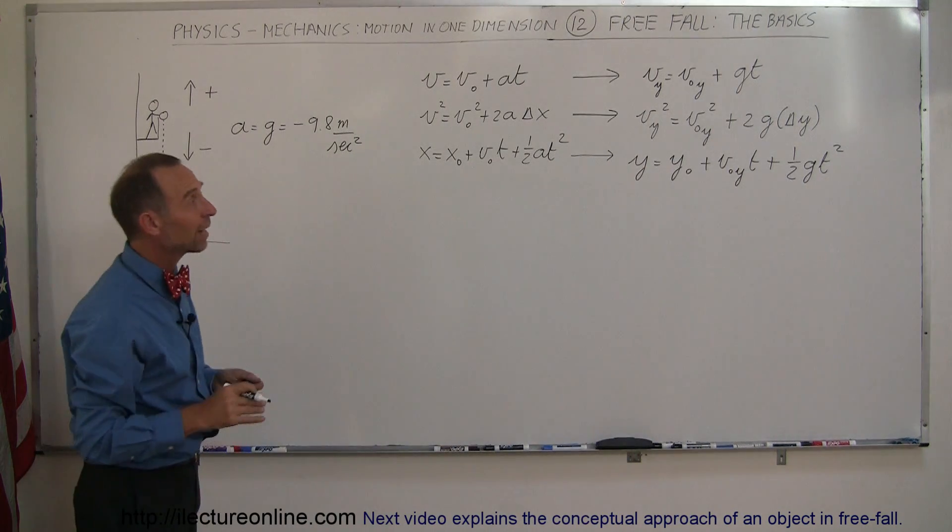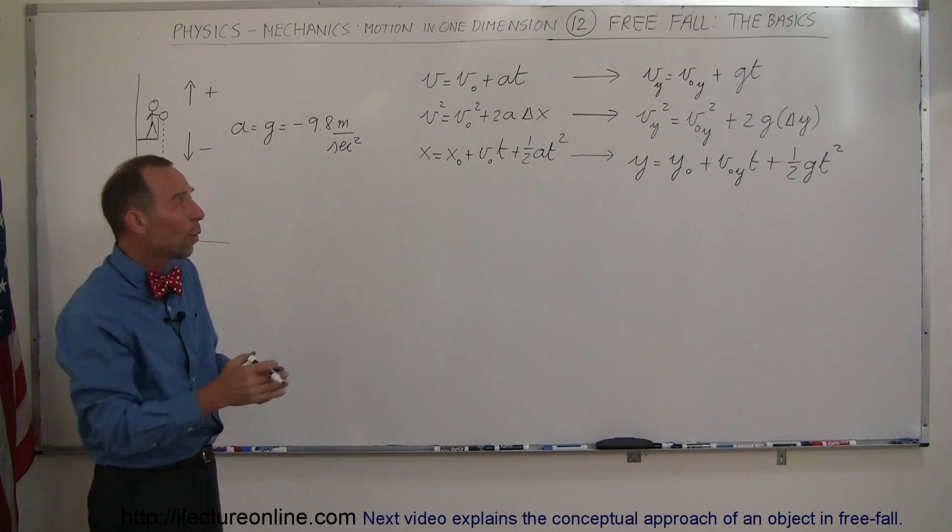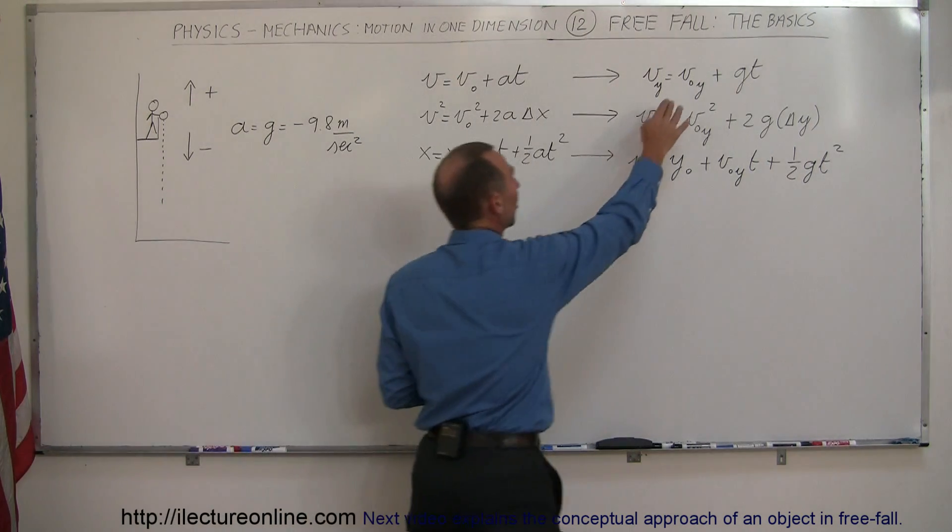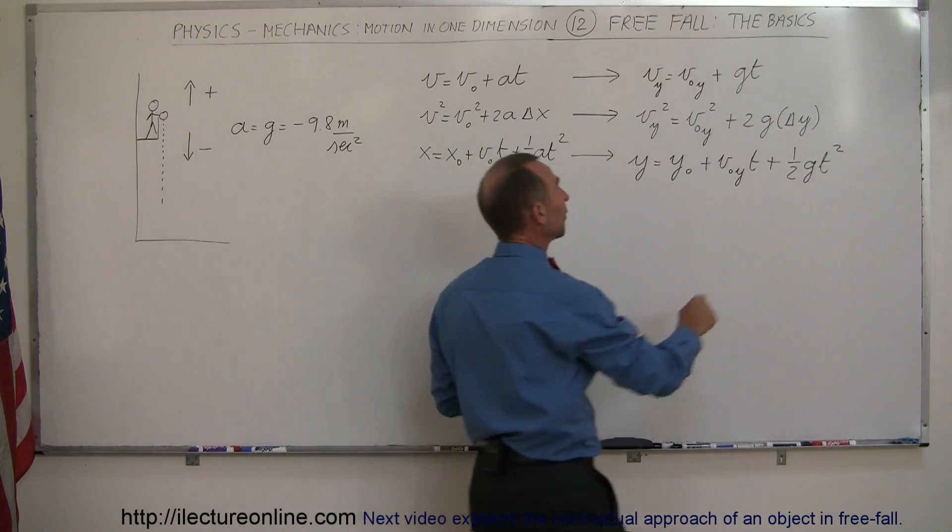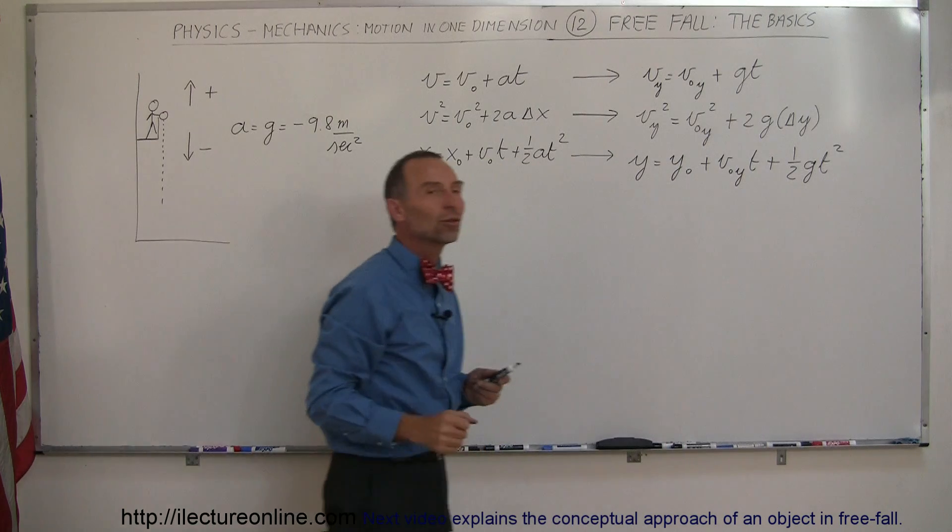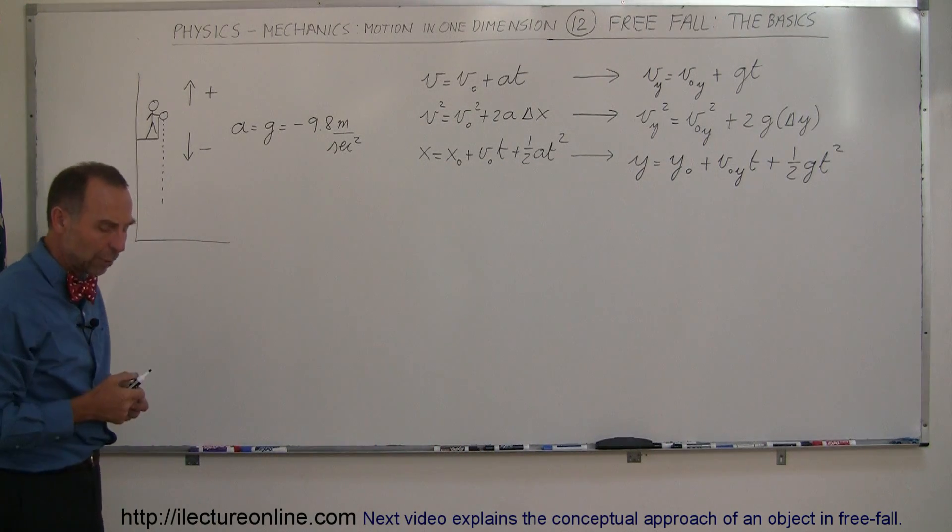So the three equations of kinematics look exactly the same except x we use y, when we use V we use a subscript indicating that it's velocity in the y direction, and finally instead of acceleration we write G, the acceleration due to gravity. And we will solve the problems in exactly the same way.